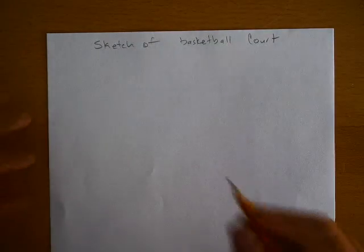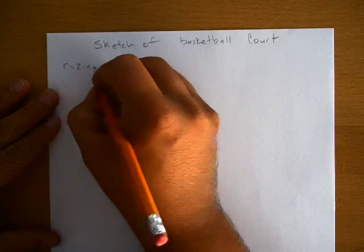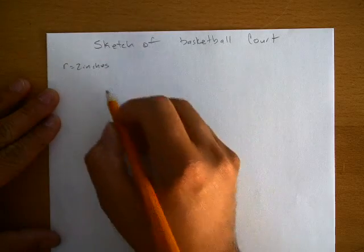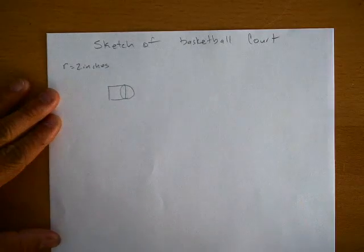The basketball court has a radius of two inches, and it's basically a square that has a circle attached to the front of it.